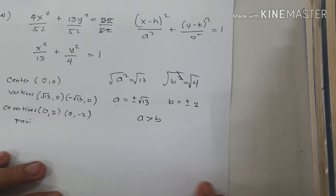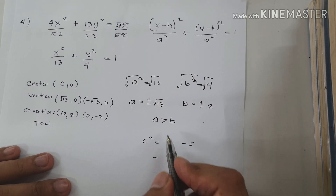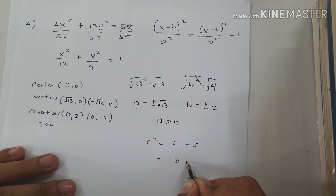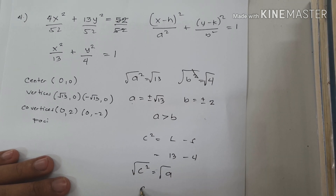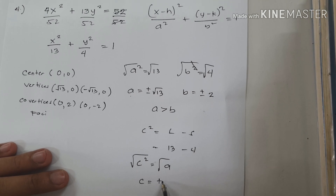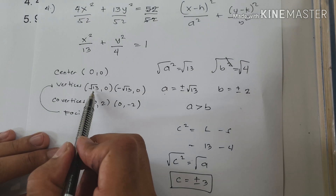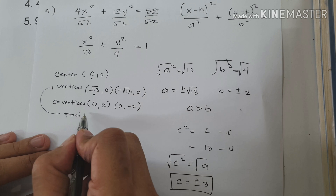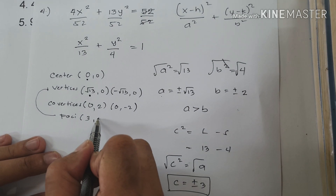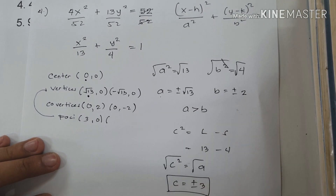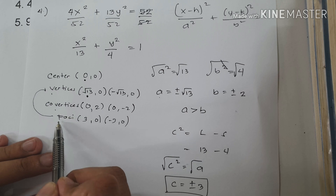To find the foci: c squared equals longer minus shorter, so 13 minus 4 is 9. Therefore c is positive and negative 3. Foci are always aligned with the vertices. Adding c to h: (3, 0) and (negative 3, 0). So those are the center, vertices, co-vertices, and foci.